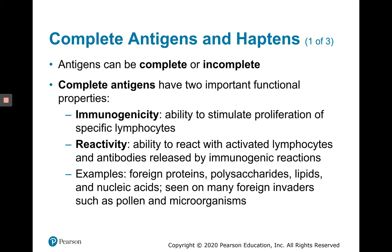Antigens can be complete or incomplete. Incomplete antigens are called haptens. Complete antigens have two important functional properties: immunogenicity and reactivity. Haptens don't have those properties unless they bind to the body's own proteins. Immunogenicity is the ability to stimulate proliferation of specific lymphocytes — essentially the ability to activate lymphocytes and generate effector cells. Reactivity is the ability to react with activated lymphocytes and antibodies released by immunogenic reactions.